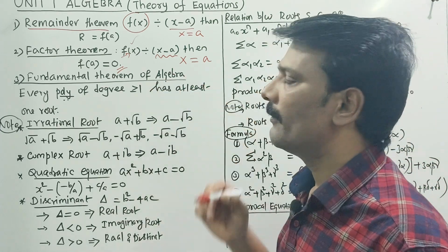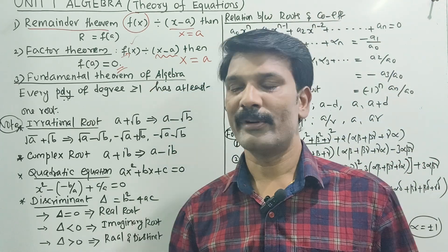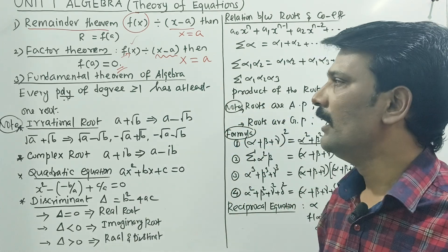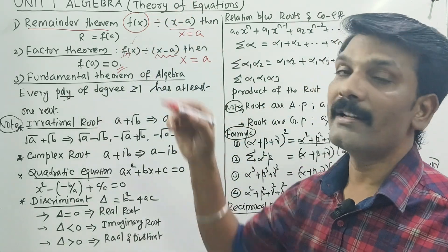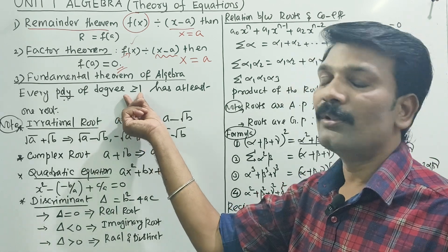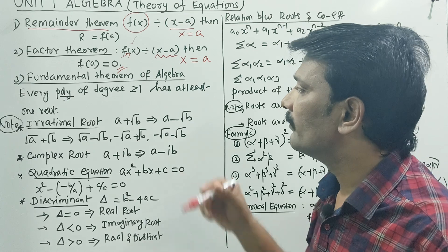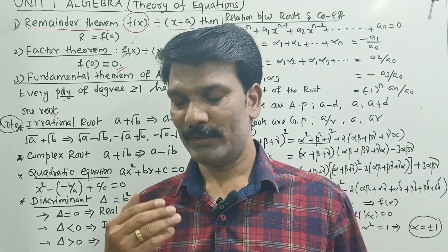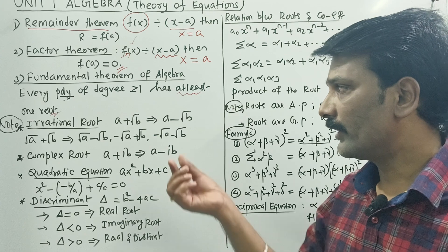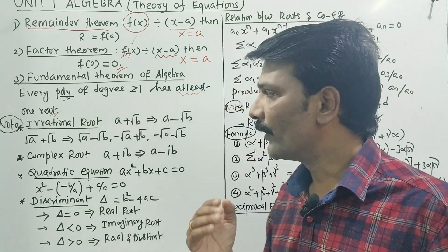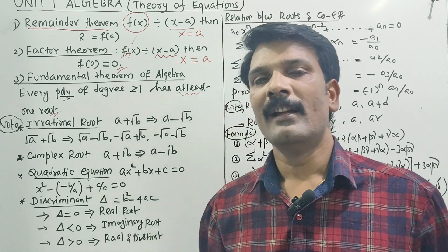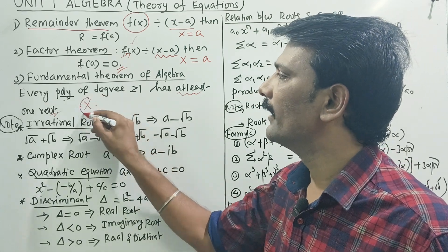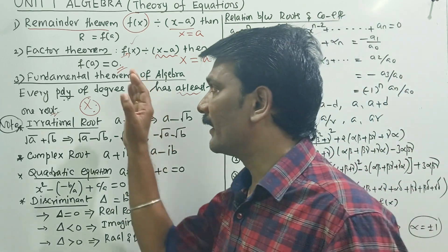Next, fundamental theorem of algebra — this is the same concept. Every polynomial of degree greater than or equal to 1 has at least 1 root. So if we take a polynomial f of x of at least degree 1, there is one root. Degree 2 has 2 roots — these roots may be real, imaginary, negative, or positive.